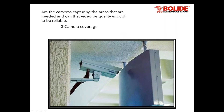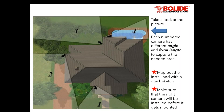Coverage is another key issue. When you spec out a job, make sure you have the right camera covering the right amount of area. It's a good idea to map out your cameras — make a map of the whole install. Make sure you have the right angle, the right focal length, and that you're covering the right area.